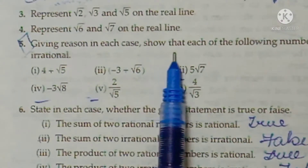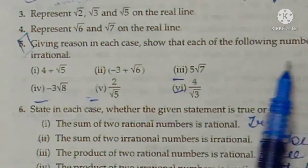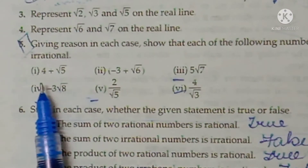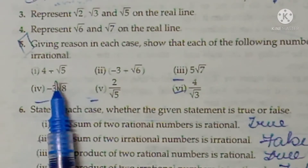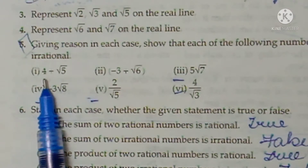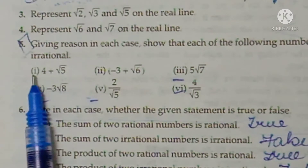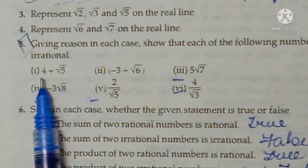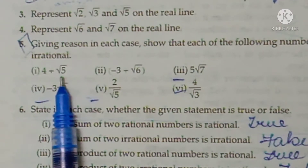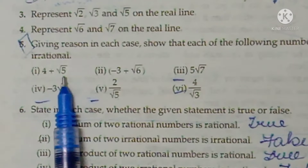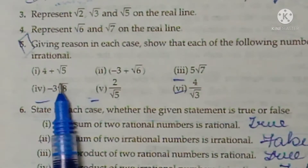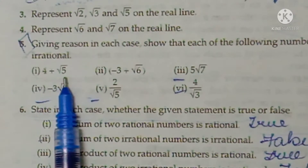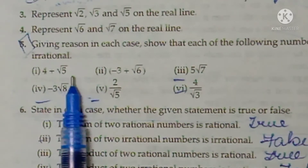Question 5: give reasons to show that each of the following numbers is irrational. You will show the properties of rational and irrational numbers. The first part is 4 + √5. This shows the sum of a rational number and irrational number √5, so by property, the sum of a rational and an irrational number will always be an irrational number.